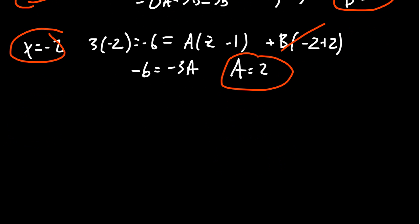So let's return to the original problem, right? We're trying to find an antiderivative. So 3x over (x+2)(x-1). That was our original fraction.